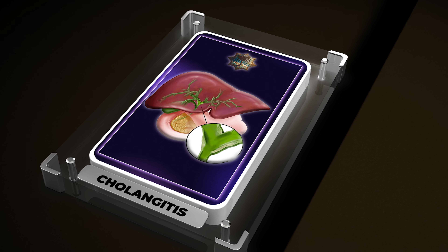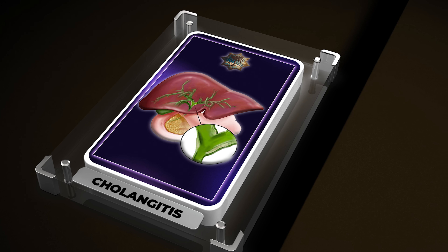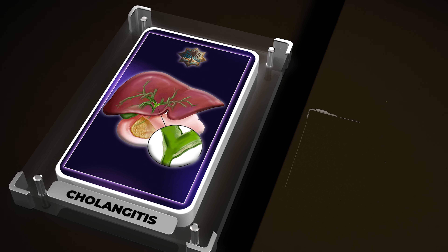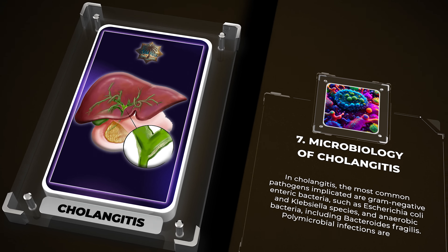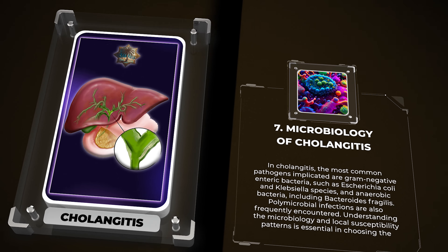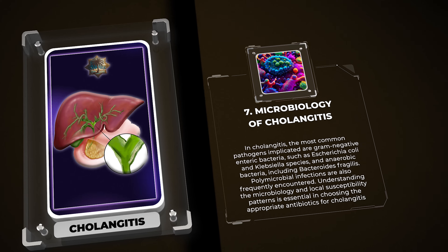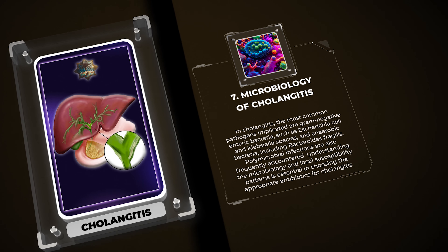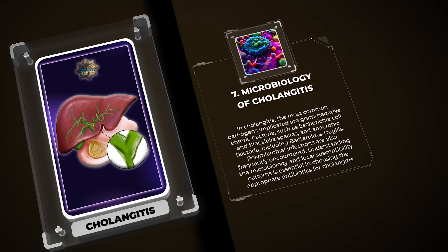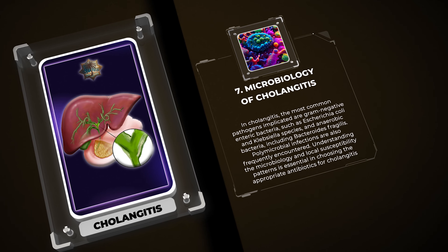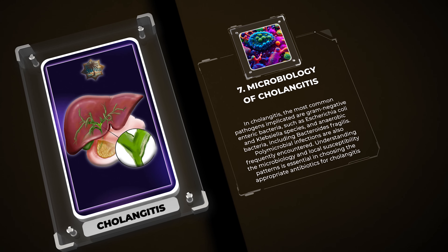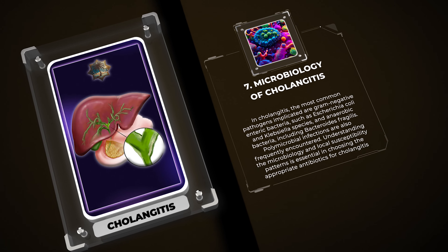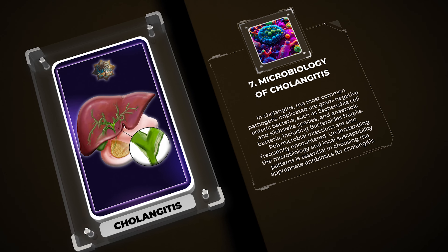In cholangitis, the most common pathogens implicated are gram-negative enteric bacteria, such as Escherichia coli and Klebsiella species, and anaerobic bacteria, including Bacteroides fragilis. Polymicrobial infections are also frequently encountered. Understanding the microbiology and local susceptibility patterns is essential in choosing the appropriate antibiotics for cholangitis treatment.